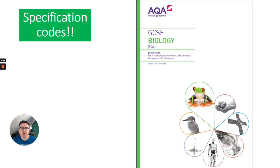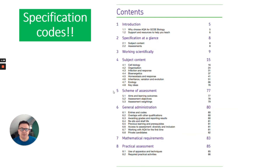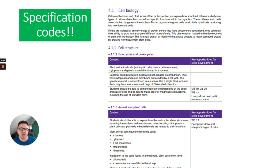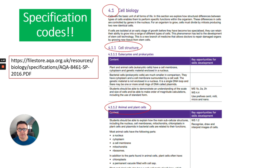You might have heard about specification codes. Spec codes can be found in the GCSE Biology AQA specification handbook. This is more for teachers, but they cover subject content — for example, cell biology shows all the things you need to revise. That's what spec codes refer to and where you can find them.